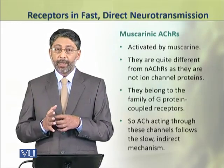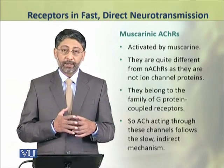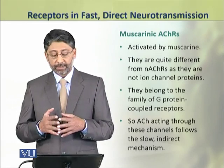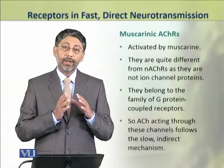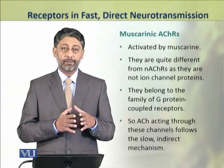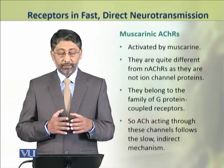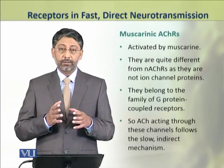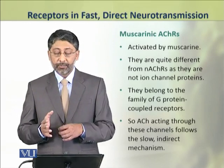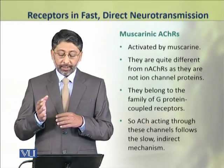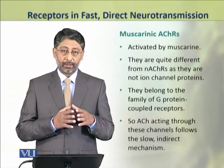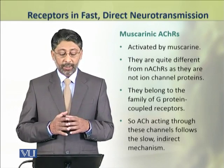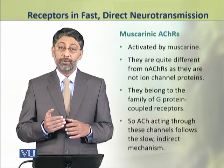The second type of acetylcholine receptors, namely muscarinic acetylcholine receptors, are activated by muscarin. They are quite different from nicotinic receptors because they are not ion channel proteins. They belong to a family of G-protein coupled receptors. This is why when acetylcholine acts through these receptors, it produces slow indirect neurotransmission.